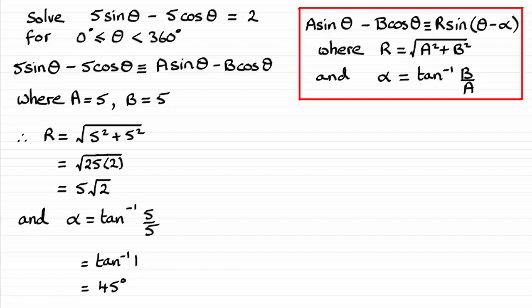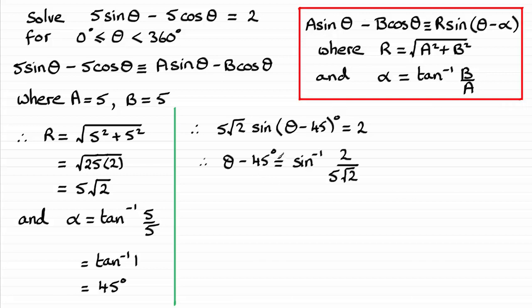So that means that we can express our equation here, using this result, R sine of theta minus alpha. We can express it as 5 root 2 sine of theta minus 45 degrees, and that equals 2. So all we need to do now is divide both sides by 5 root 2. If you do that, you're left with theta minus 45 degrees equals the inverse sine of 2 all over 5 root 2.